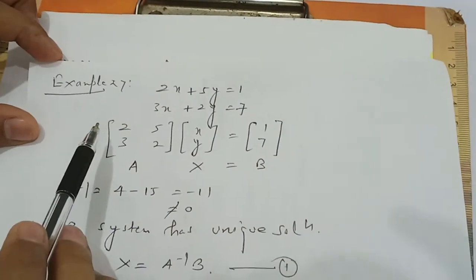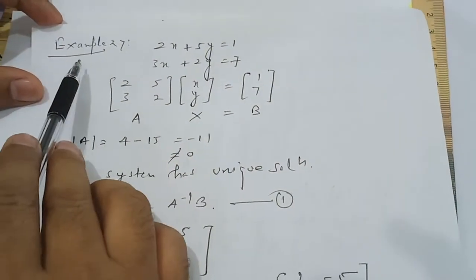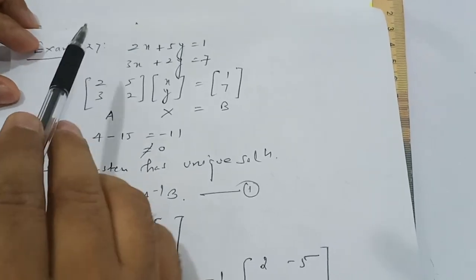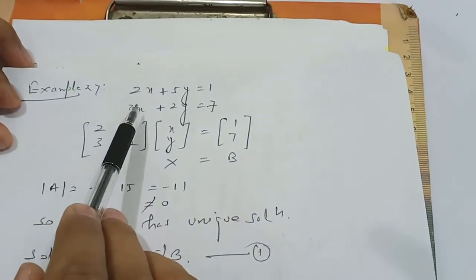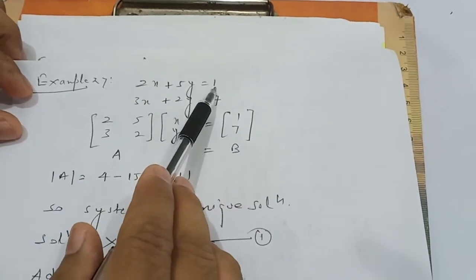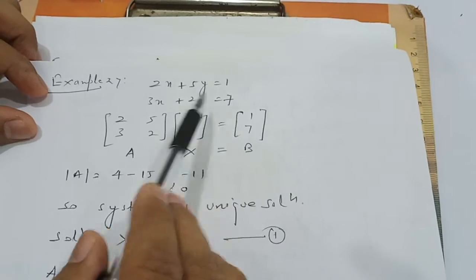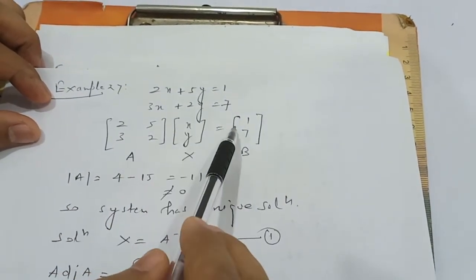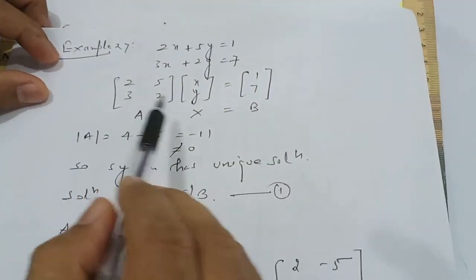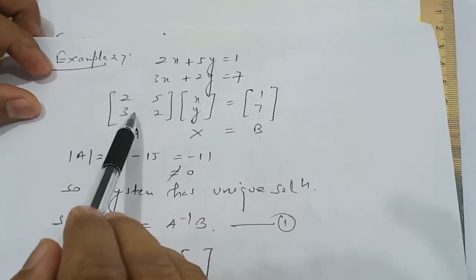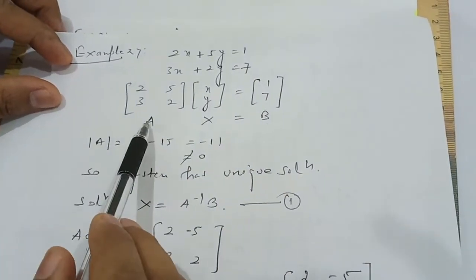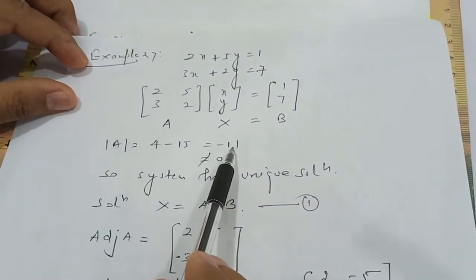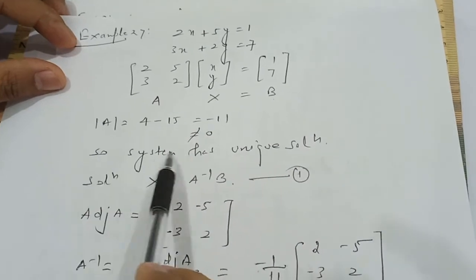Now based on the above results, let us take example number 27 from our textbook. The system of linear equations is: 2x + 5y = 1 and 3x + 2y = 7. We first get determinant A, which equals 4 − 15 = −11, which does not equal zero. So the system has a unique solution.